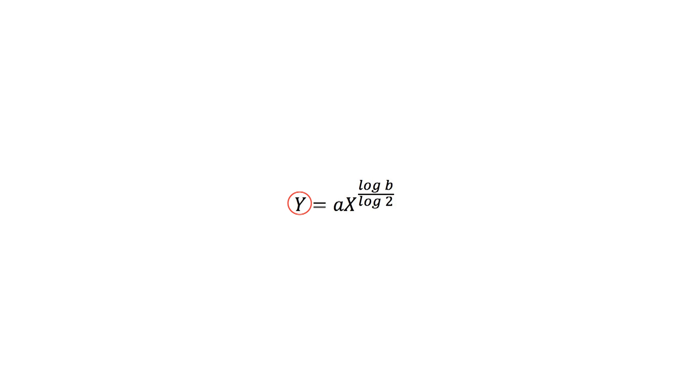The average time per unit (Y) equals the time per unit (A) multiplied by the cumulative volume of production (X), considering B as the learning rate. Let's see a graphical representation to better understand the concept.